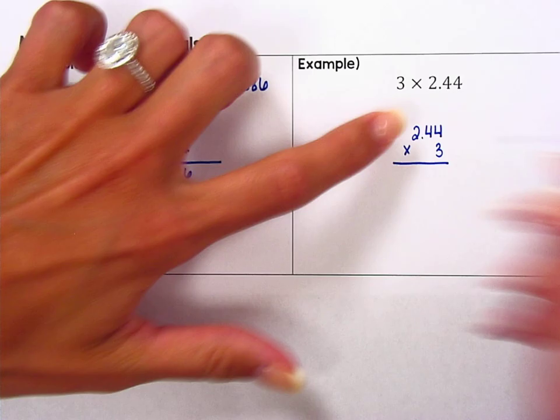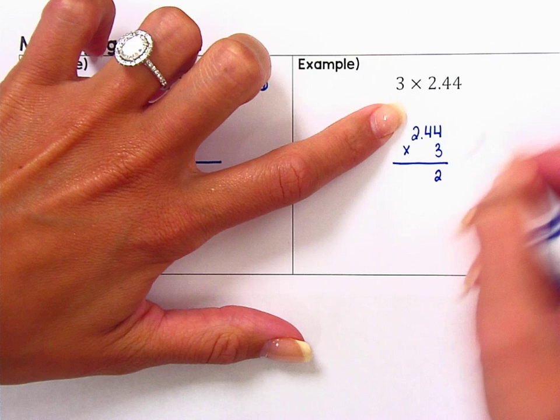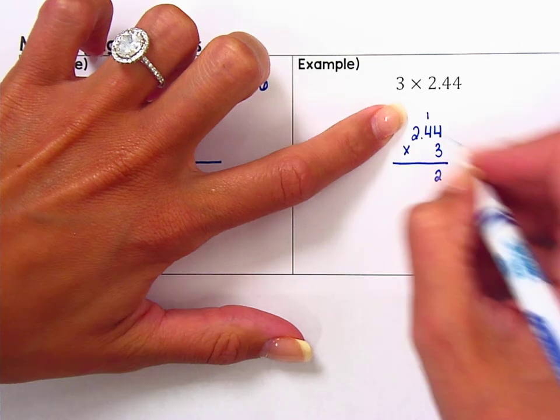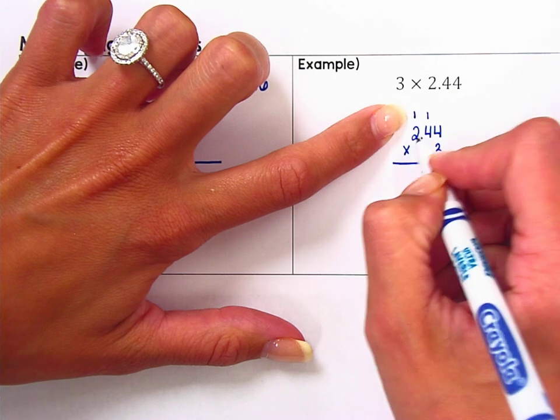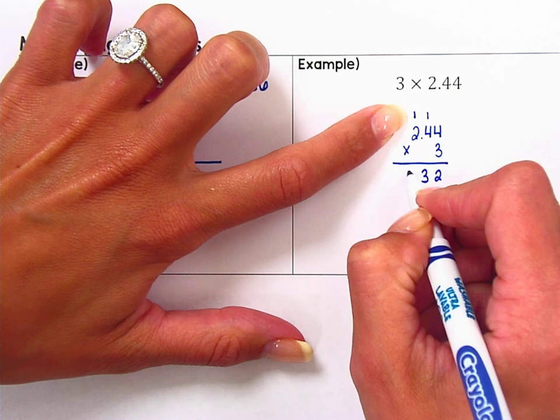We can go ahead and multiply. 4 times 3 is 12. Carry the 1. 4 times 3 is 12 plus 1 is 13. 2 times 3 is 6 plus 1 is 7.